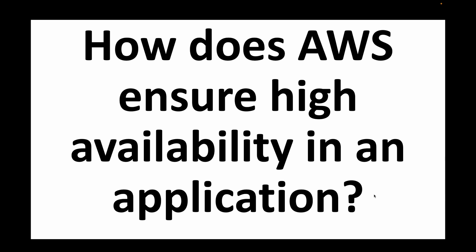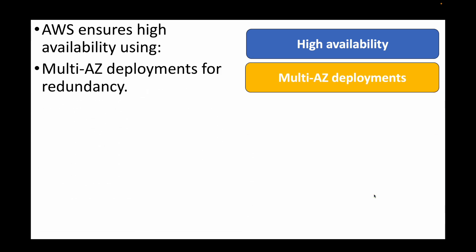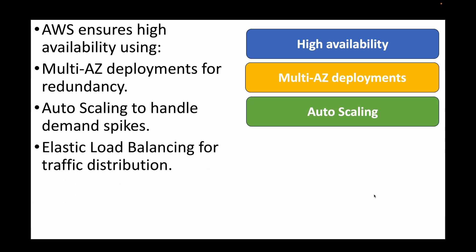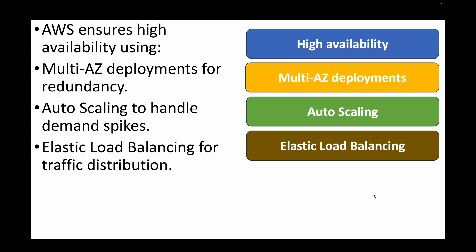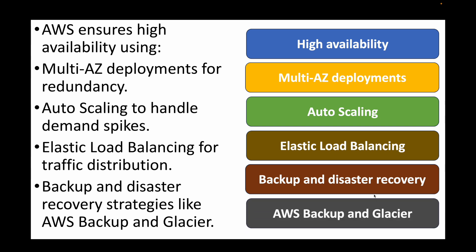The next question is: how does AWS ensure high availability in an application? You can deploy your application across multiple availability zones for redundancy, enable auto scaling to handle demand spikes, and use Elastic Load Balancing to distribute traffic. You can also set up backup and disaster recovery using services like AWS Backup and Glacier to store data for future use. Leveraging all these options together makes your application highly available.